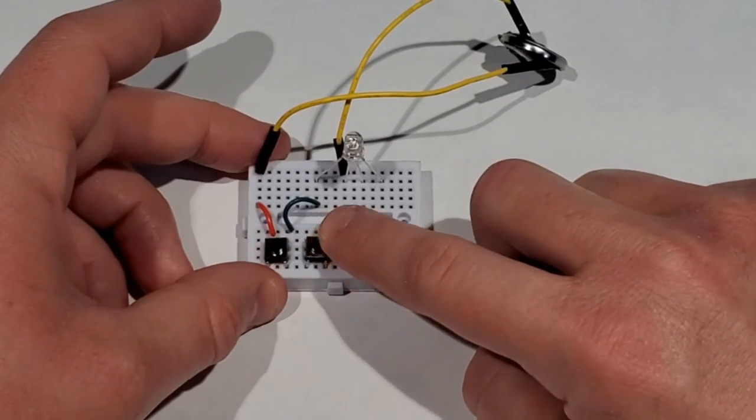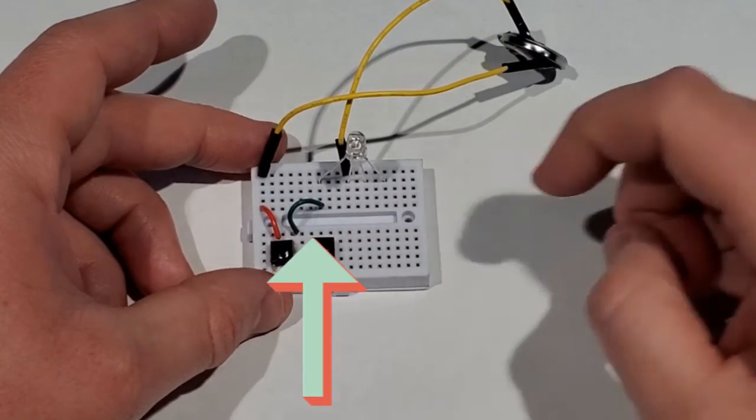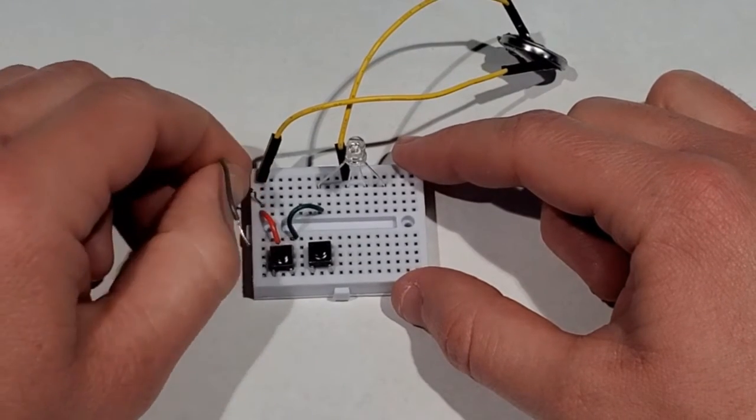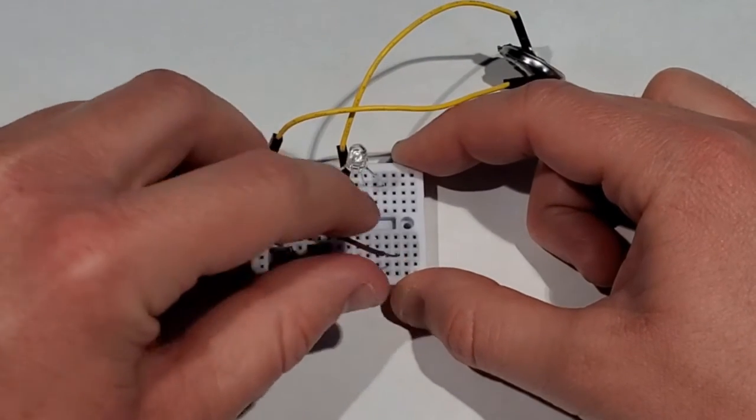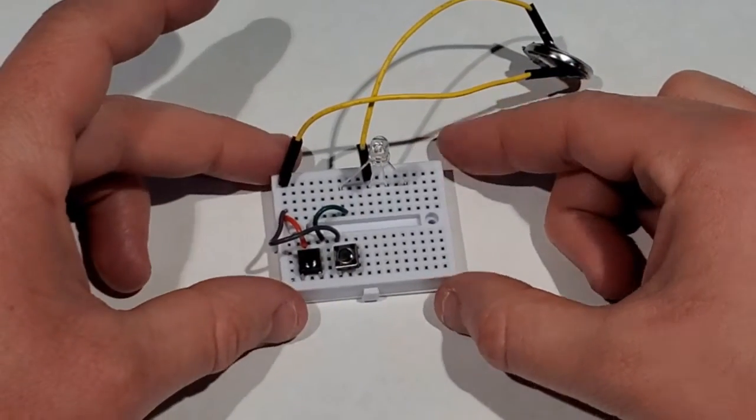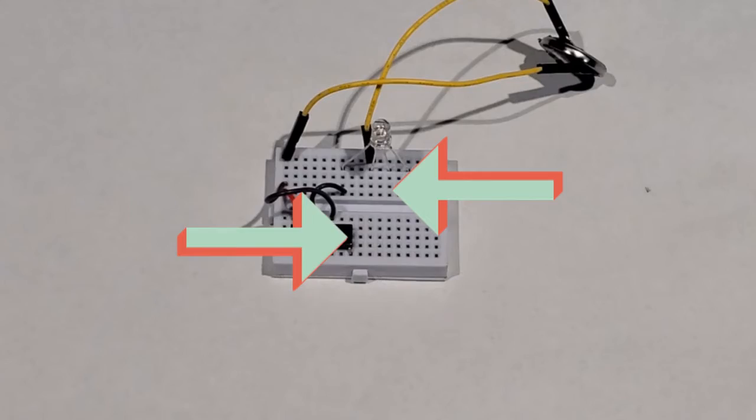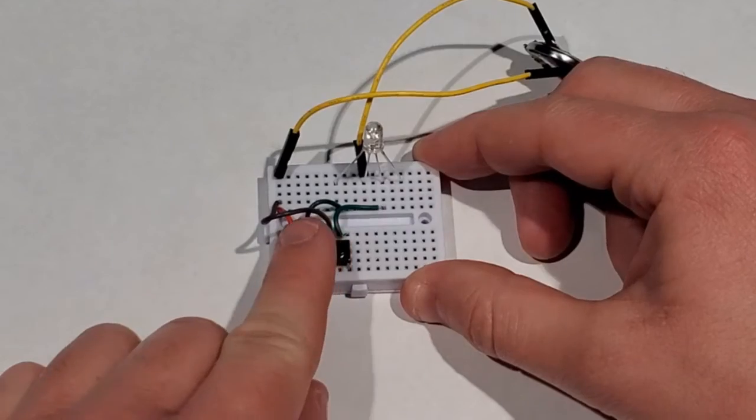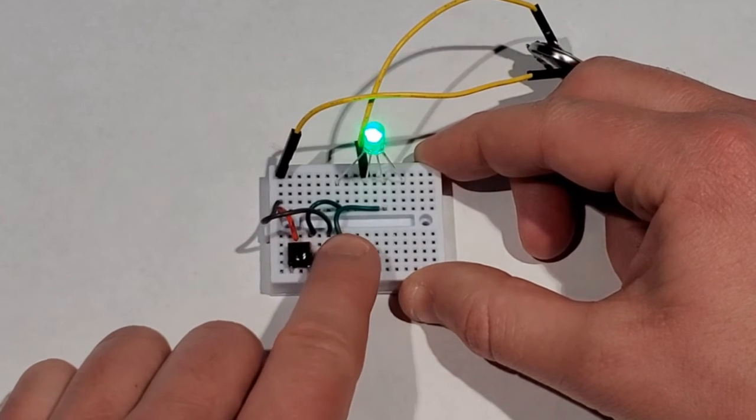You're going to put another button down and we're going to do something similar. We're going to attach a wire from here to here. You can use a longer wire. And now we're going to attach another wire from here to the third prong of the three light LED. Now we have two lights going.